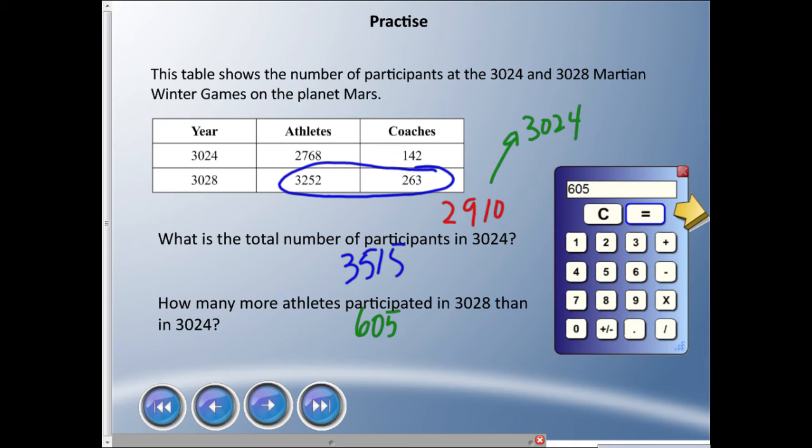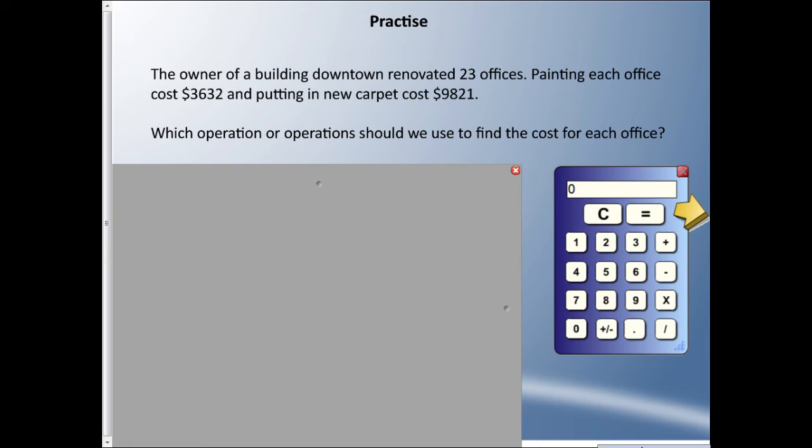That's a silly example, but you can see if you were in the future you could answer that problem. One last one here with a few steps. This is a real life problem that happens all the time. The owner of a building downtown renovated 23 offices. Painting each office cost $3,632 and putting in new carpet cost $9,821.